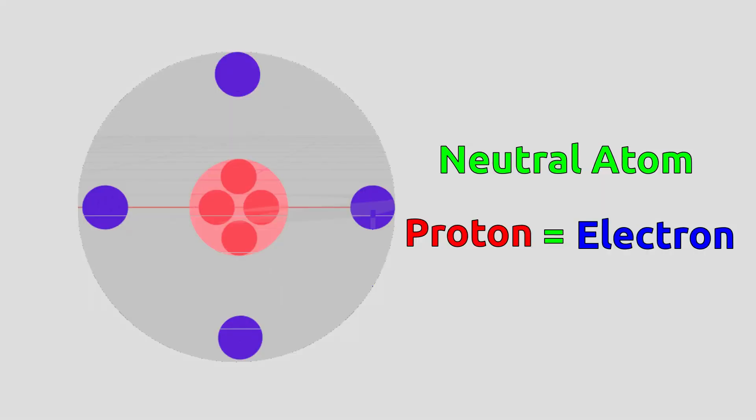Everything around us is made of atoms, and atoms contain electrons and protons. Electrons are negatively charged particles and protons are positively charged particles.